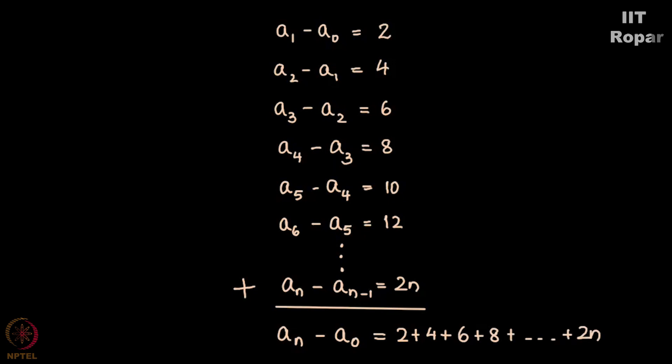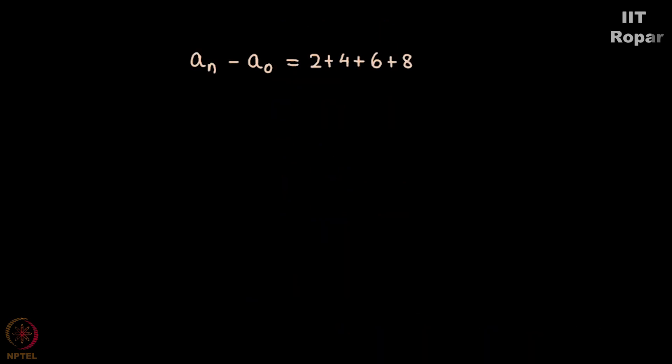What remains at the end is An - A0 = 2 + 4 + 6 + 8 + ... + 2n. How did we get this? Only An term remains and A0 term remains at the end after summing up, and the sum on the right hand side becomes 2 + 4 + 6 + 8 ... up to 2n.